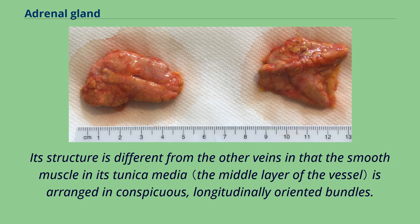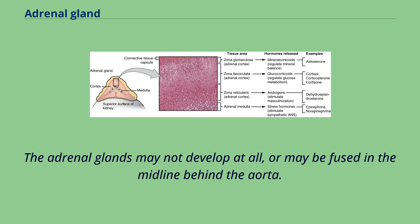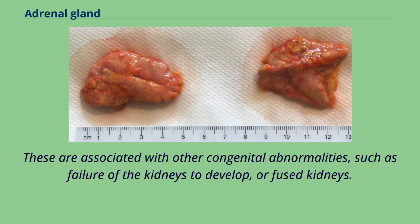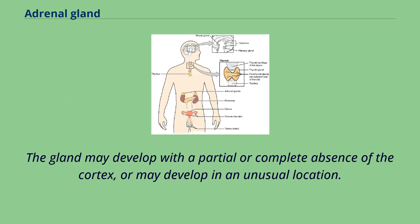The central adrenomedullary vein's structure differs from other veins in that the smooth muscle in its tunica media is arranged in conspicuous, longitudinally oriented bundles. The adrenal glands may not develop at all, or may be fused in the midline behind the aorta; these are associated with other congenital abnormalities, such as failure of the kidneys to develop or fused kidneys. The gland may develop with a partial or complete absence of the cortex, or may develop in an unusual location.